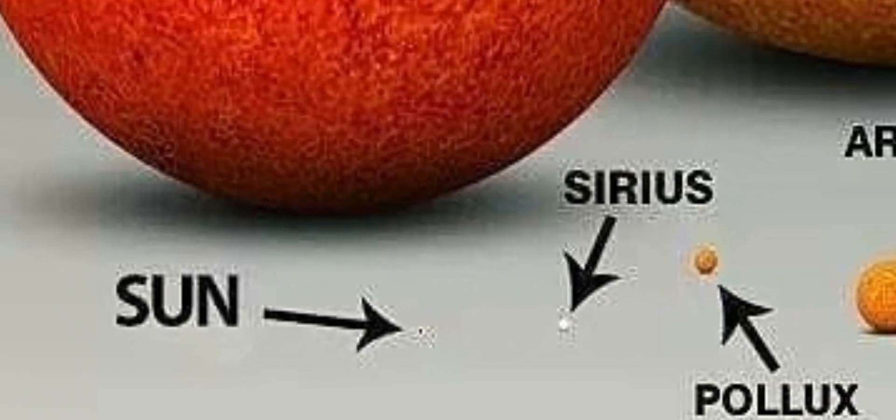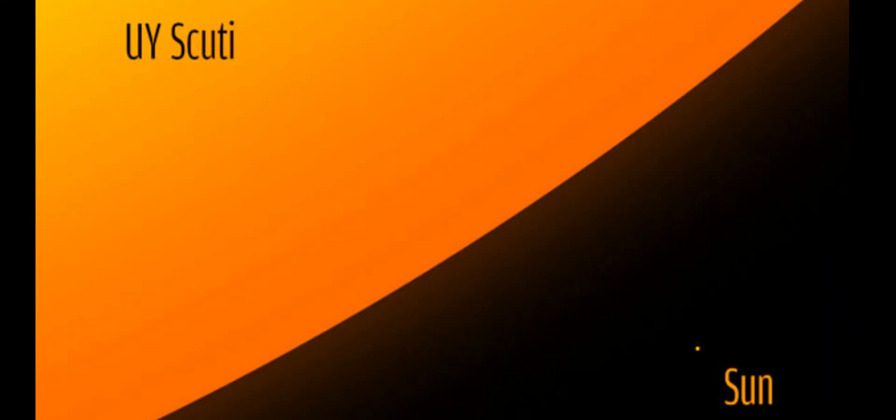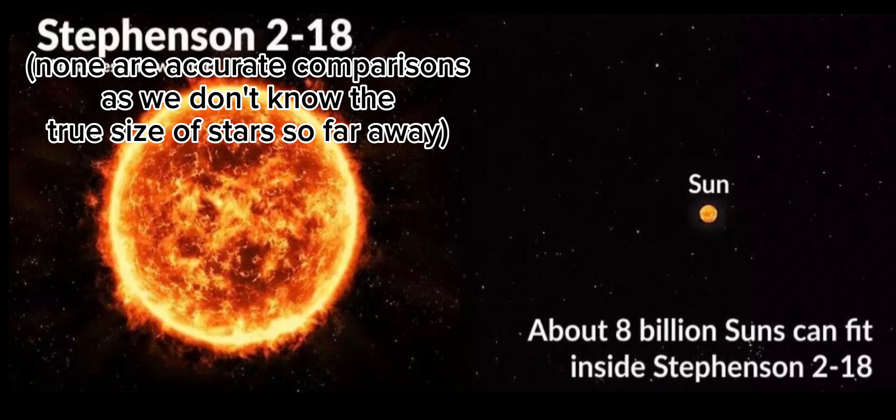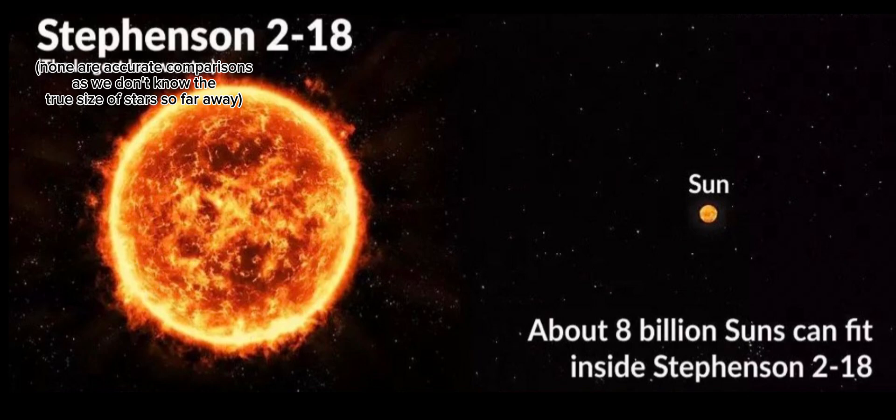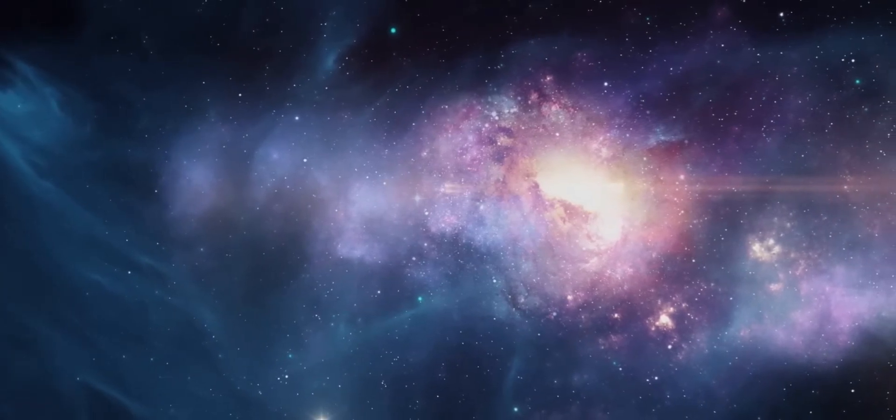Some hypergiant stars are much, much larger. For instance, one of the biggest stars known is Stefansson 218, which is 2150 times the diameter of our Sun, because all measurements of things far away are just estimates.